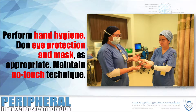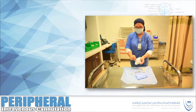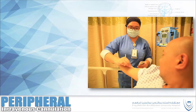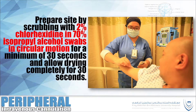Maintain no-touch technique. Open all sterile packaging using sterile technique and place in the clean trolley. Prepare the site by scrubbing with 2% chlorhexidine in 70% isopropyl alcohol, using swabs in a circular motion for a minimum of 30 seconds, then allow to dry completely for 30 seconds.